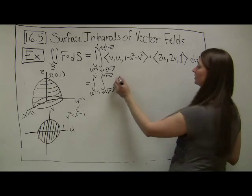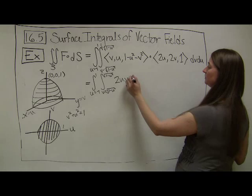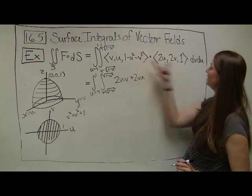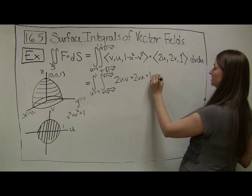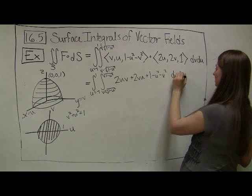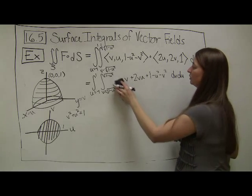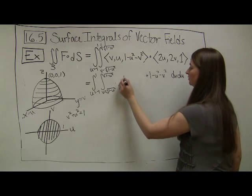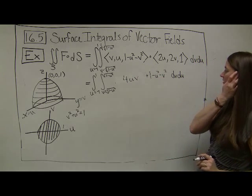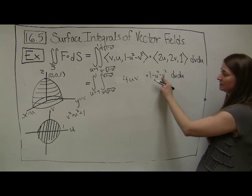Taking the dot product: first components give 2uv, second components give 2vu, and the final components give 1 - u² - v². Since the first two terms are the same, we get 4uv + 1 - u² - v². We could integrate this with respect to v, but it will end up with messy square roots.